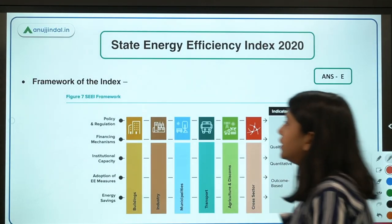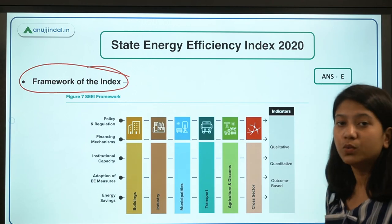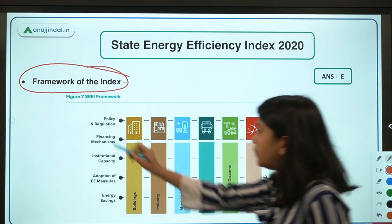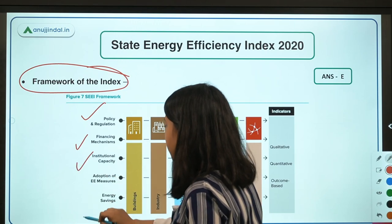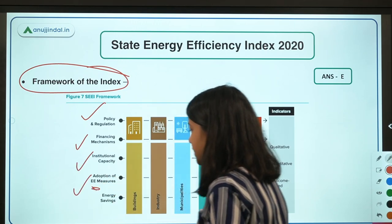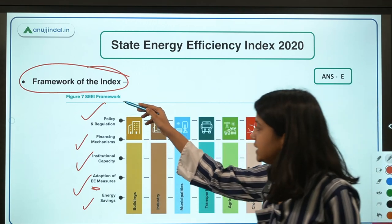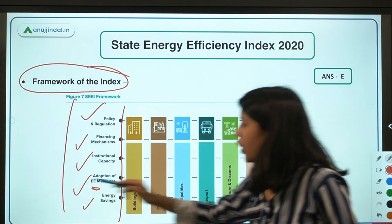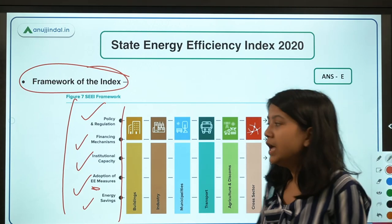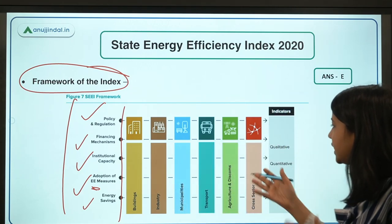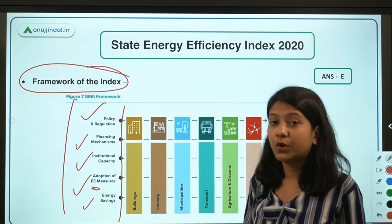The framework indicators used to prepare this index are: policy, regulation, financing mechanism, institutional capacity, adoption of energy efficiency measures, and energy savings. These parameters are important for exam purposes. Deep details of the framework are not required for Phase 1 of the exam.